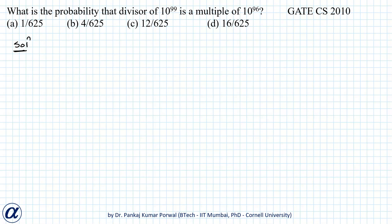In this question, we want to find the probability that a divisor of 10 to the power 99 is a multiple of 10 to the power 96. So basically we need the total number of divisors of 10 to the power 99, and out of these total divisors, how many are multiples of 10 to the power 96 — that will give us the favorable number of ways.